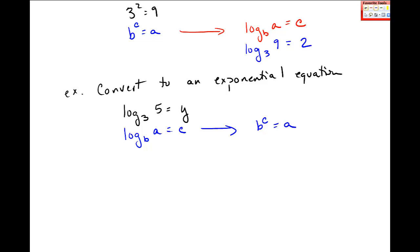When I do that, I get b is 3, a is 5, and c is y. This is the final answer. This is the same form in this exponential equation form.